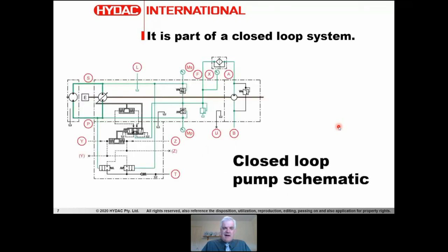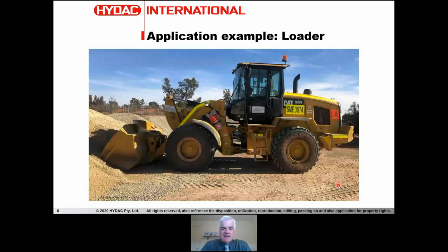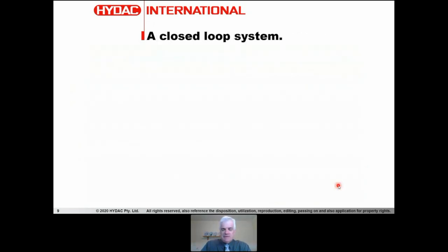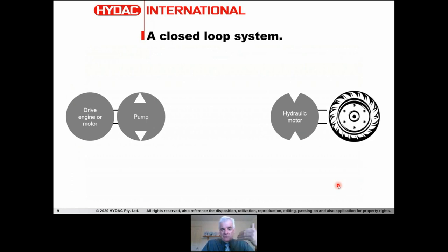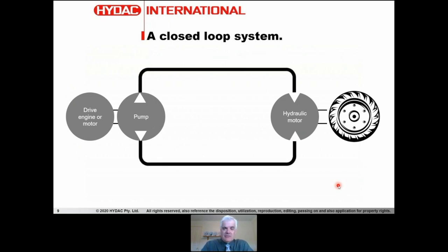A closed loop system is more complicated. This is the schematic symbol for a closed loop pump and motor. Applications for closed loop systems include wheel drive on a loader, where the wheels are driven by hydraulic motors. With a closed loop system, an engine or drive motor drives a pump, which drives a hydraulic motor, which then drives the wheels — that's how power is transmitted.